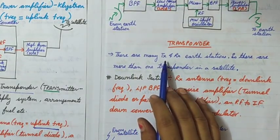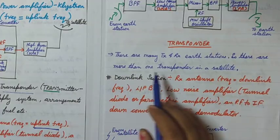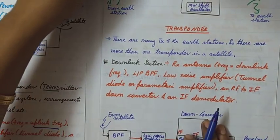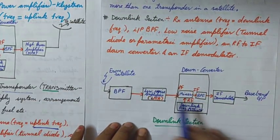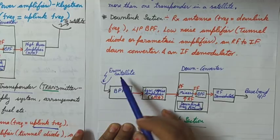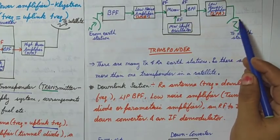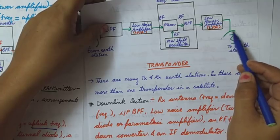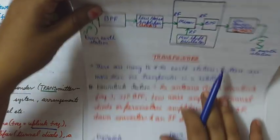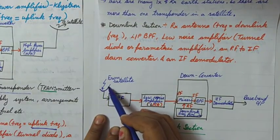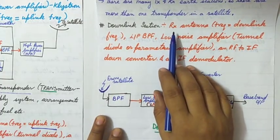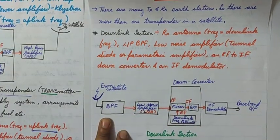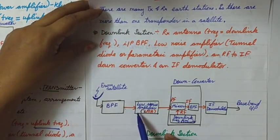Since there are many earth stations, there are more than one transponder on the satellite to cater to the needs of multiple transmitters and receivers. Now the downlink section — the earth station receiver. The signal transmitted from the transponder arrives at the downlink frequency. The receiving antenna at the earth station is tuned to that downlink frequency so it can receive the signal. The downlink section has a receiving antenna, a bandpass filter to make the signal precise — called the input bandpass filter.